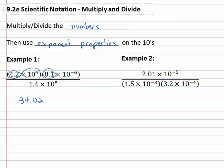And then we'll use exponent properties on the tens, times ten to the, adding exponents, four minus six is negative two. And that's still all over 1.4 times ten to the fifth. Now we can do the division.